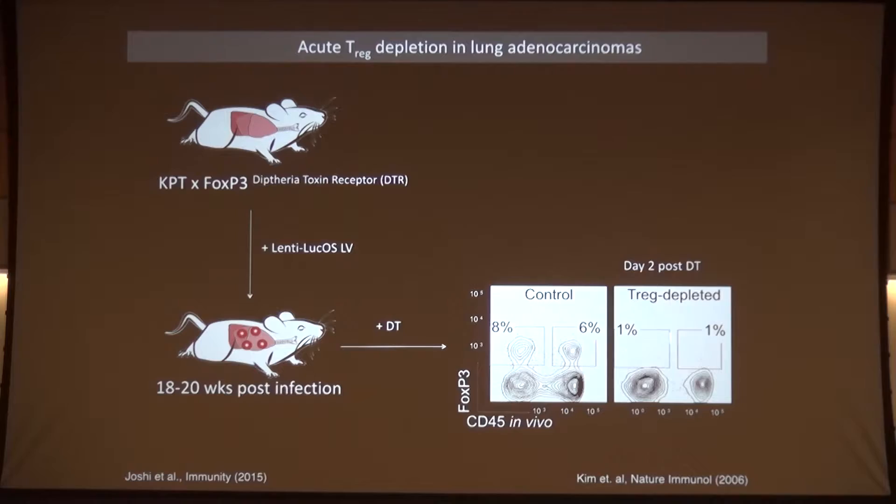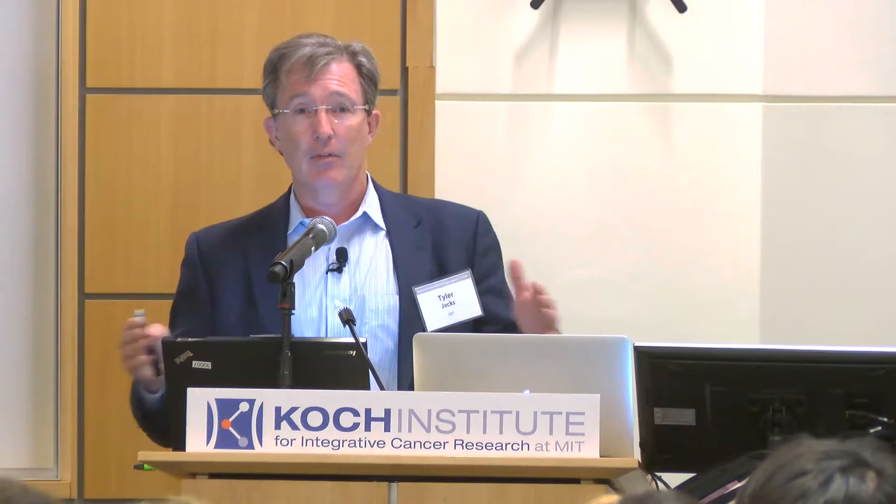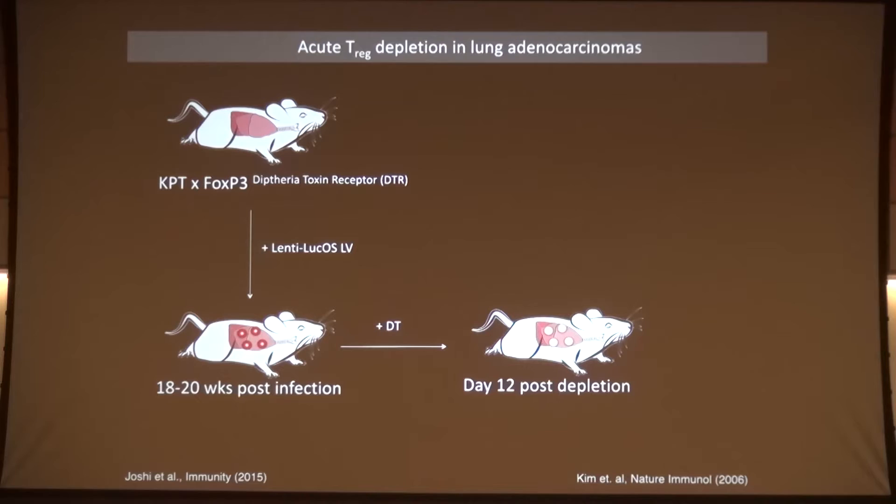We crossed all those alleles together, generated tumors in these mice using antigen-expressing constructs, and then depleted regulatory T cells by the addition of diphtheria toxin. They get depleted quite readily. We had to assess outcomes 12 days later because if we waited any longer, these animals died or had to be sacrificed due to autoimmune responses — we're getting rid of Tregs throughout the animal.